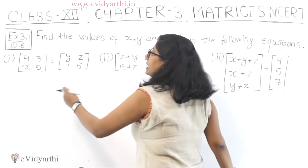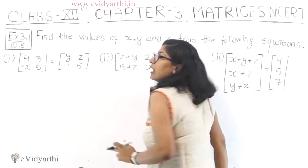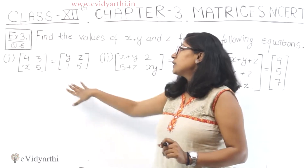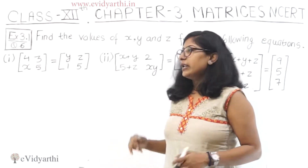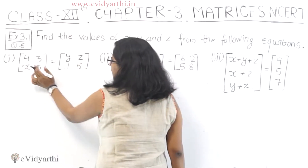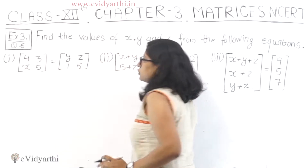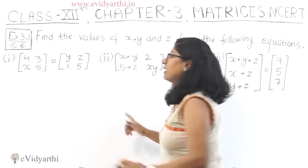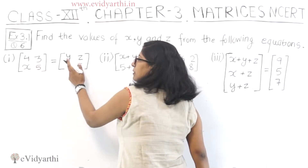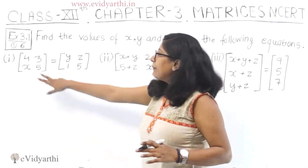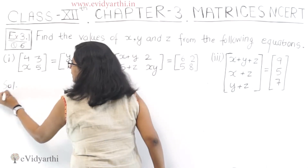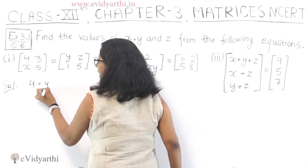So if you have a first entry, you have to match it with the first entry, and all the entries are equal. We say that the two matrices are equal. Let's quickly check: first entry — 1st row, 1st column. Here also 1st row, 1st column — the entry is 4 and y, so simply we write 4 is equal to y.